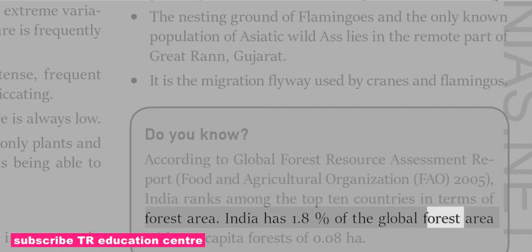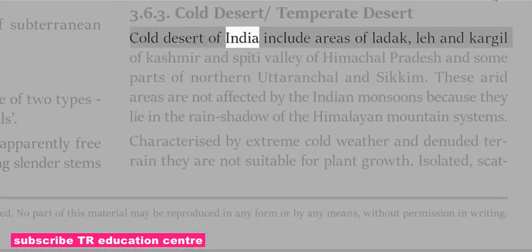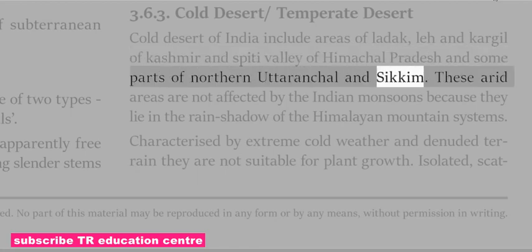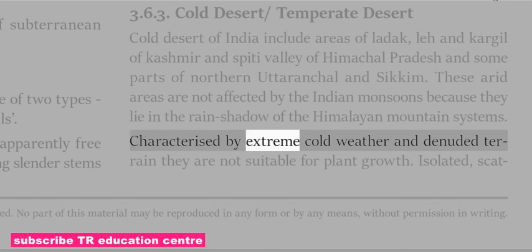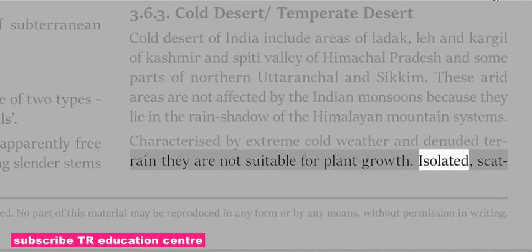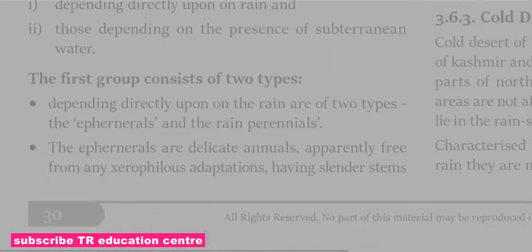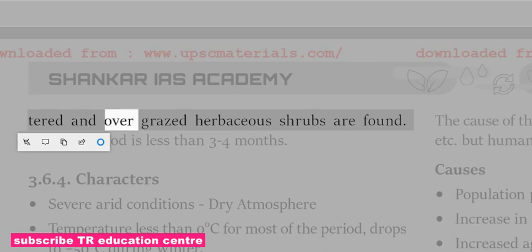The Cold Desert of India includes areas of Ladakh, Leh and Kargil in Kashmir, Spiti Valley of Himachal Pradesh, and some parts of northern Uttaranchal and Sikkim. These arid areas are not affected by the Indian monsoons because they lie in the rain shadow of the Himalayan mountain systems. Characterized by extreme cold weather and denuded terrain, they are not suitable for plant growth; open-grazed herbaceous shrubs are found, and the grazing period is less than 3 to 4 months.